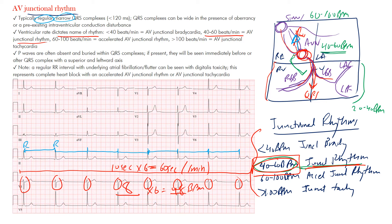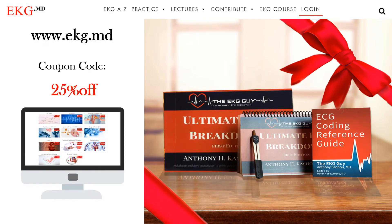To summarize: a junctional rhythm originates from the AV junctional region, often due to sinus node dysfunction. Its intrinsic rate is 40–60 bpm. Remember: less than 40 is junctional bradycardia, 40–60 is junctional rhythm, 60–100 is accelerated junctional rhythm, and over 100 is junctional tachycardia. The P wave is absent, buried in the QRS, or appears as inverted P waves in inferior leads due to retrograde atrial activation.